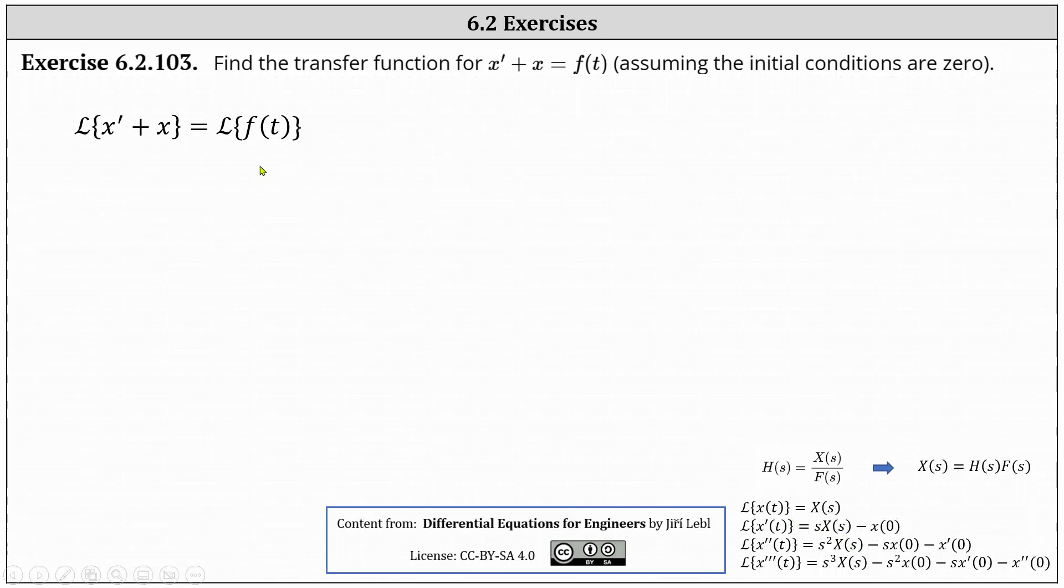and the Laplace transform of x is equal to big X of s. This indicates the left side is s times big X of s minus x of zero plus big X of s equals, on the right, the Laplace transform of f of t is equal to big F of s.